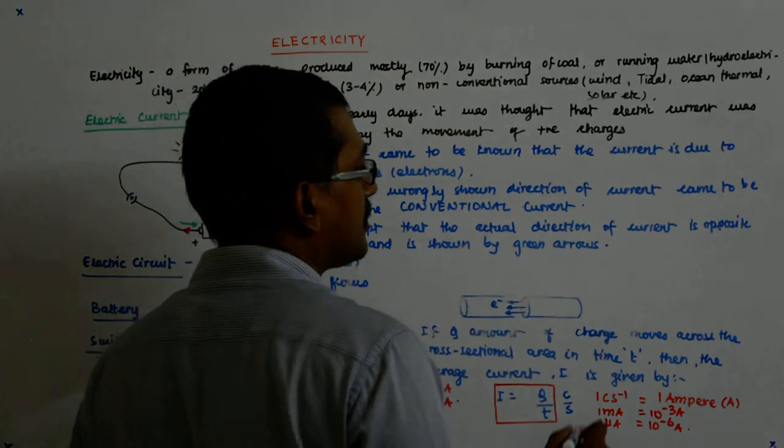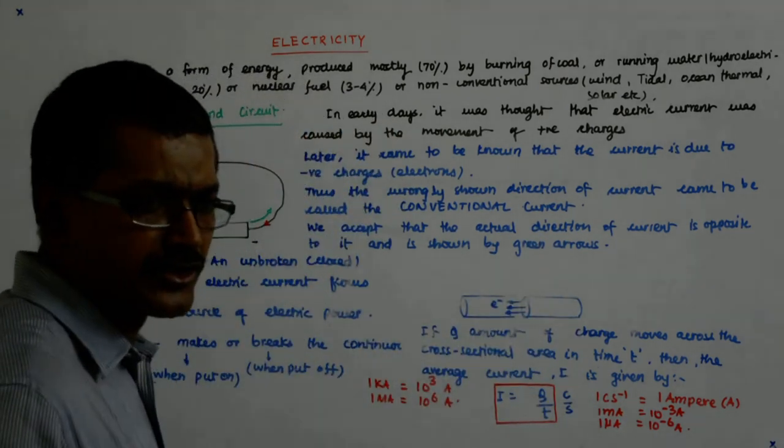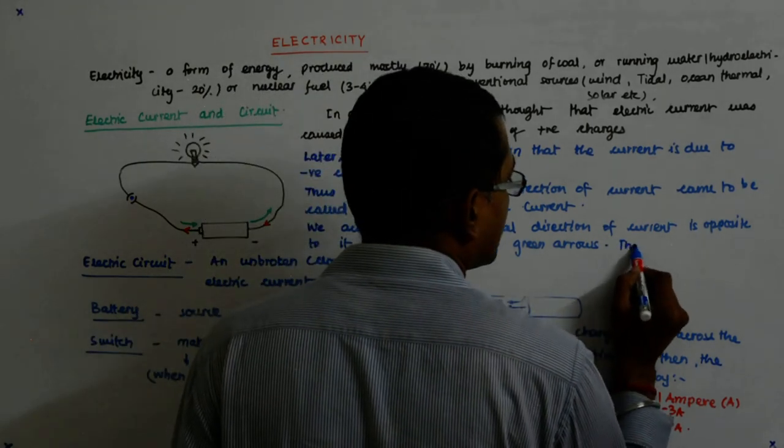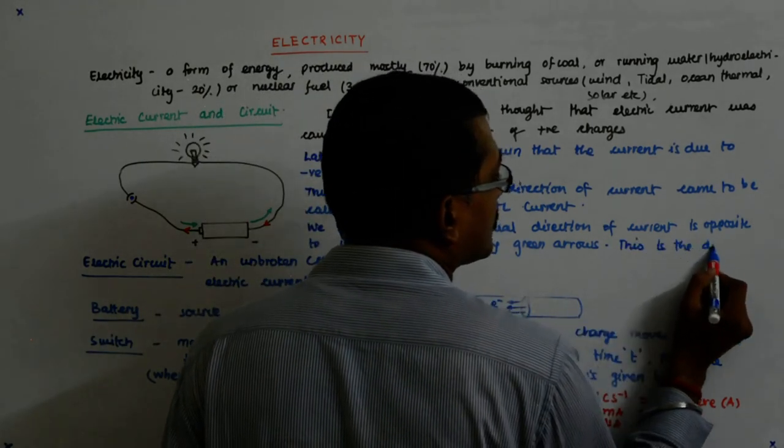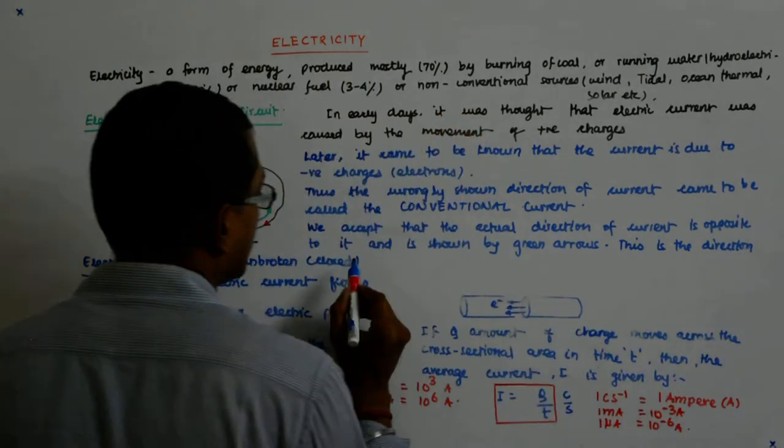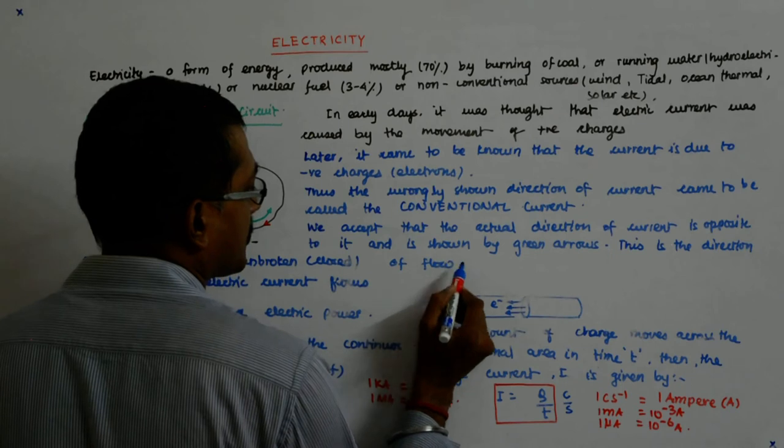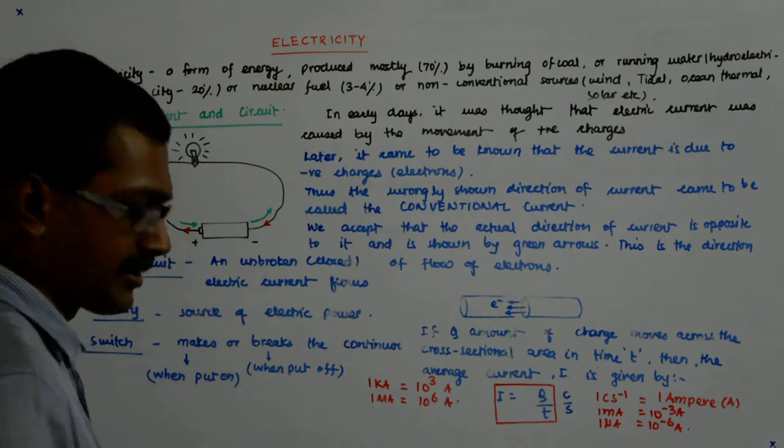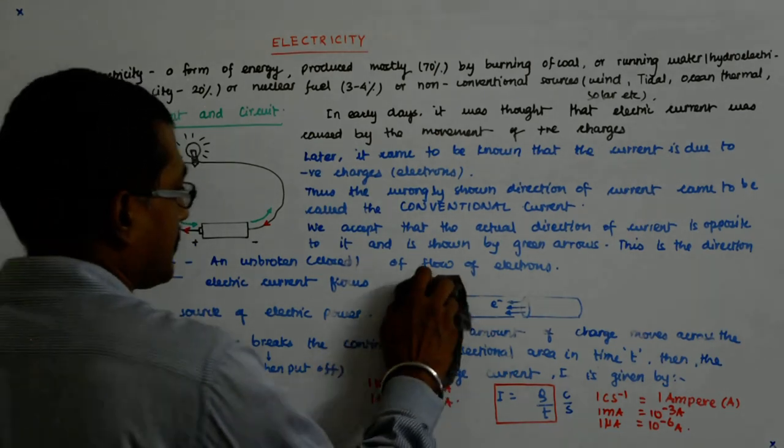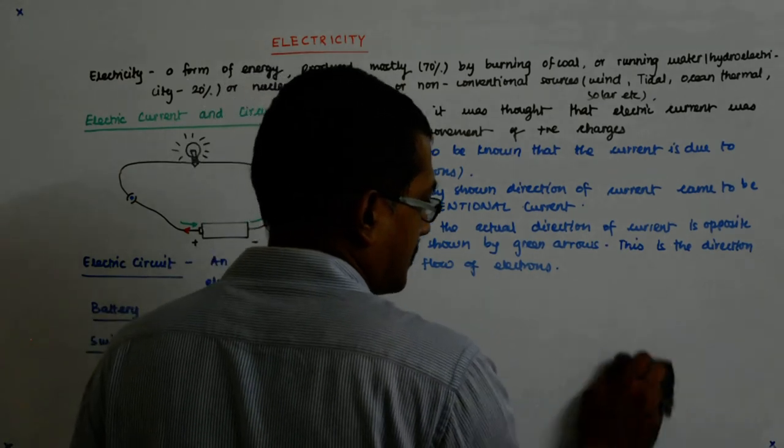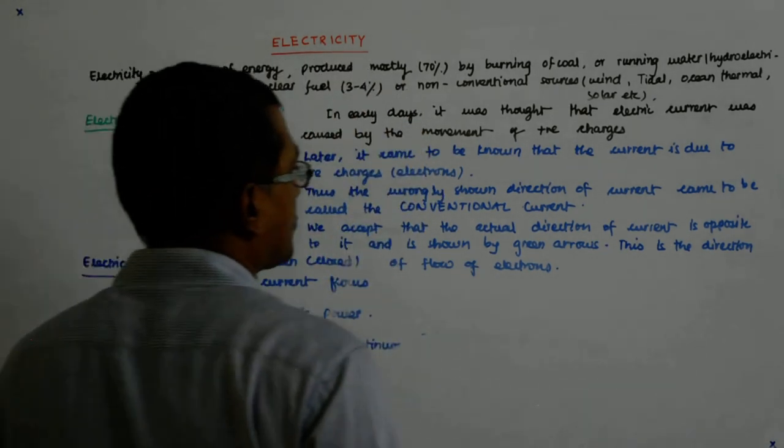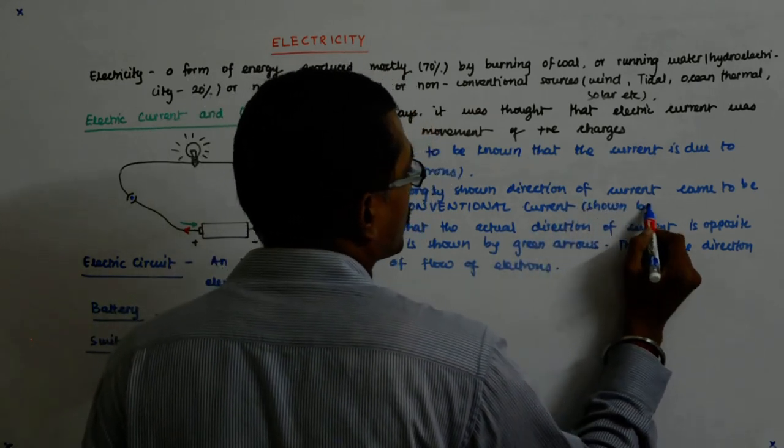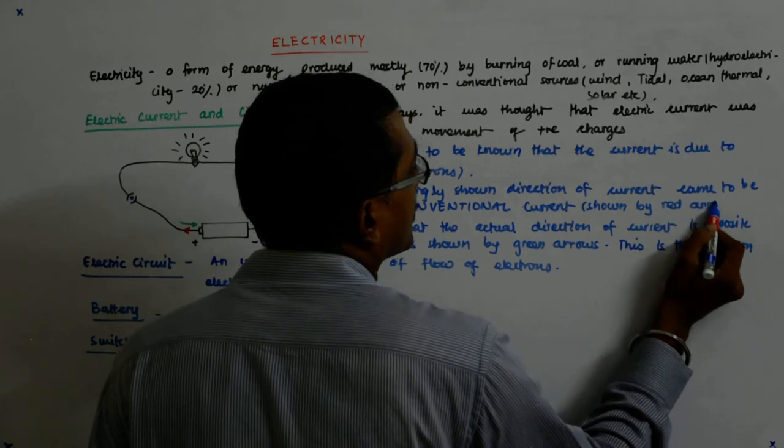Actual direction of current—the actual direction of current is actually the direction of flow of electrons. This is the direction of flow of electrons. We get the point. And the conventional direction is shown by red arrows.